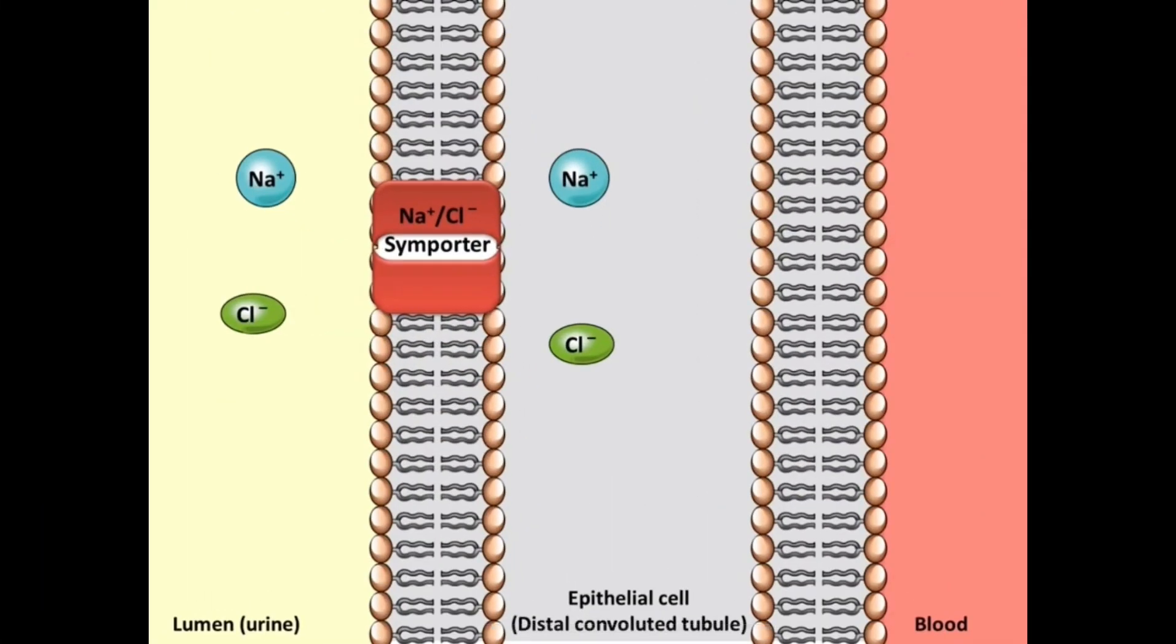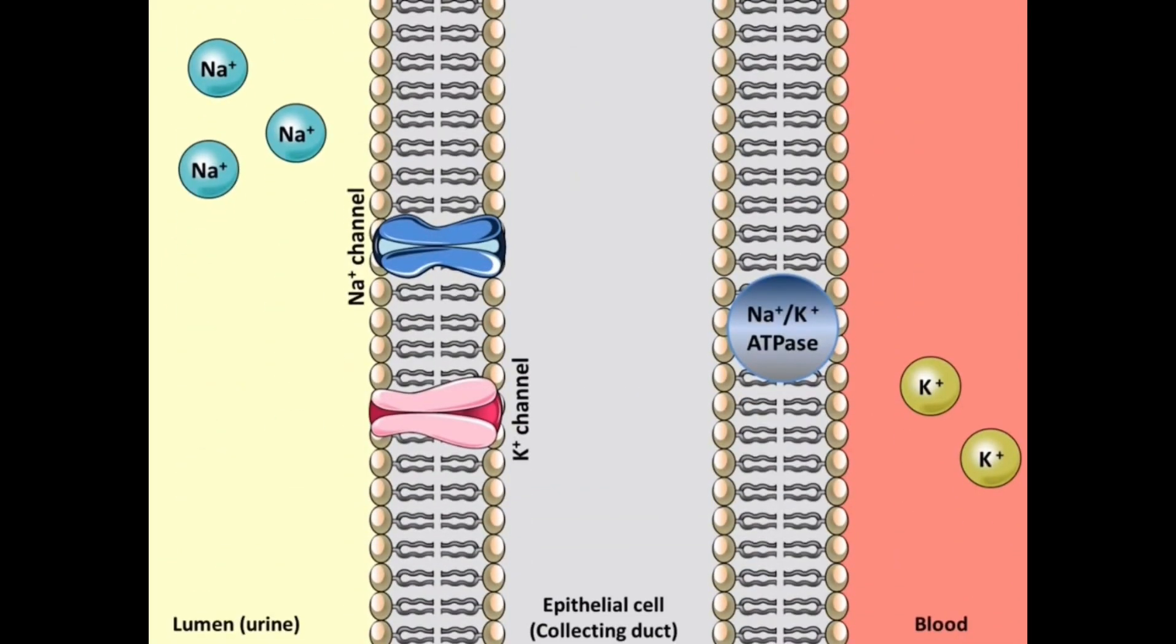This is where thiazide diuretics work. They function by obstructing the sodium chloride symporter through binding to the chloride binding site. This results in the inhibition of sodium and chloride reabsorption from the lumen or filtrate into the epithelial cells, thereby causing an alteration in sodium concentration within the DCT. This ultimately leads to an increase in sodium chloride content in the tubular fluid descending into the collecting duct. With a greater quantity of sodium now present in the filtrate, more sodium can be absorbed into the collecting duct epithelial cells through the sodium channels.